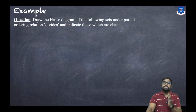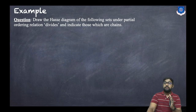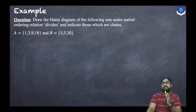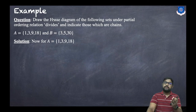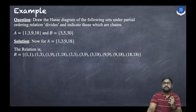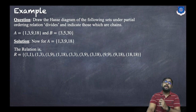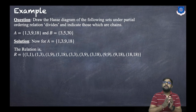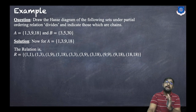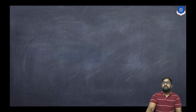Now let us discuss an example. The question is: draw the Hasse diagram of the following sets under the partial order relation 'divides', and indicate those which are chains. The first set is {1, 3, 9, 18} and the second set is {3, 5, 30}. For the first set, let's write the relation. Since every number divides itself, we have (1,1), (3,3), (9,9), (18,18). Then 1 divides every number: (1,3), (1,9), (1,18). Also, (3,9), (3,18), and (9,18).